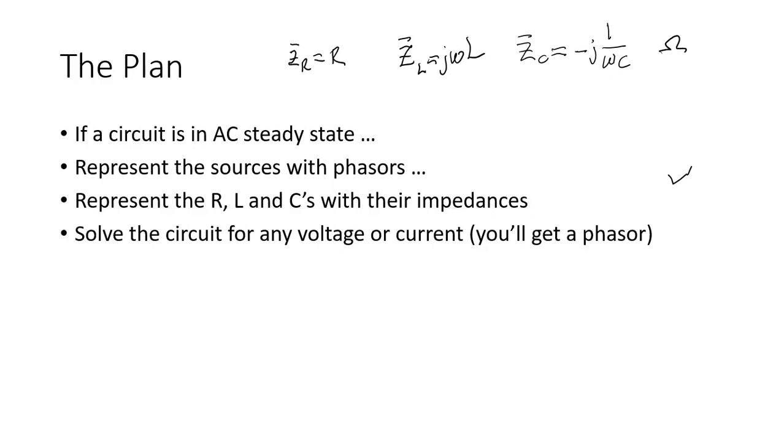So the same way we combine resistors in parallel, because these impedances respect Ohm's law, and that's all we used to come up with that simplifying formula that resistors follow: Ohm's law, KVL, and KCL. So with that in hand, we solve the circuit for any voltage or current. Of course, what we're going to get is not the voltage or the current, we will get the phasor of that voltage or the phasor of the current. And then we turn that phasor into a sinusoidal function of time that can be evaluated at any point in time t.